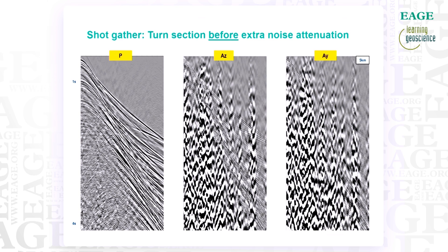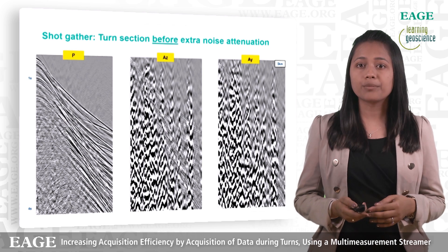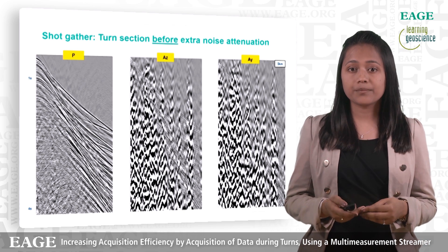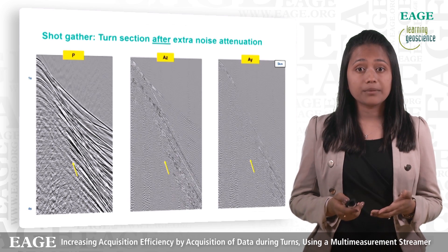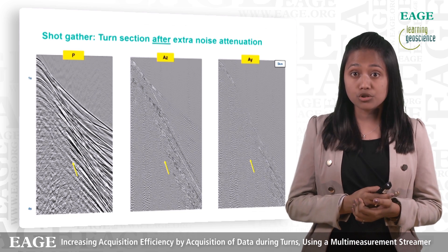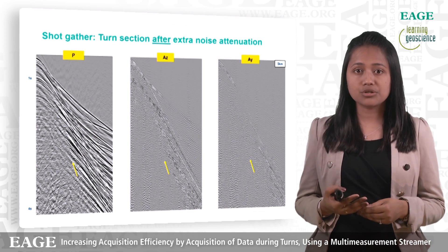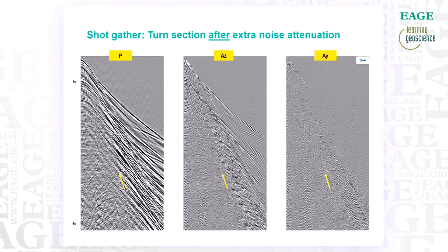Here we look at another shot, also after acquisition data conditioning but during the full turn, and it is immediately obvious that there is a significant level of noise, particularly on the accelerometer data. Elevated levels of noise are to be expected on the accelerometers due to increased cross-flow and greater forces on the streamers. Although mostly low frequency noise, it is within the signal bandwidth. Applying the extra noise attenuation does a good job on the hydrophone data and removes significant noise on the accelerometers. There is some residual noise evident and this can affect the quality of reconstruction, especially at positions away from the constraining cables. Once the majority of the noise is removed, we can see that there is good recoverable signal on the accelerometer data. The yellow arrow highlights just one of many instances where we see good signal — an event which can be correlated across Y and P but not represented on Z, showing the complementary nature of the Y and Z measurements.